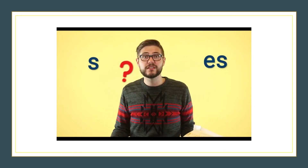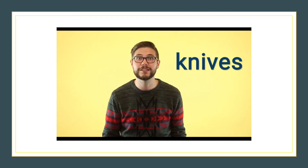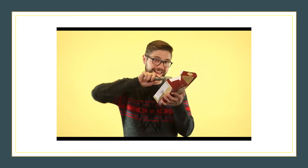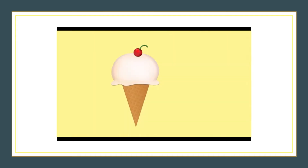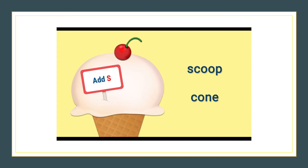When making words plural, why do we add S to some words, but ES to others? And when a word ends in Y, how do we know whether to change Y to I before adding ES? And why on earth does knife become knives? You can unravel these mysteries with six simple scoops of ice cream. The first rule is simple: to make most words plural, just add S, as in scoops and cones.